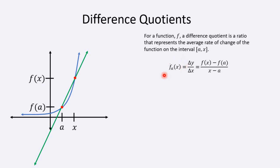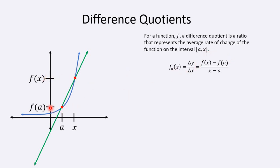The symbol we use is an f with a bar on top of it, a subscript of a — which represents the beginning of the interval — and the independent variable x, which represents the end of the interval. The difference quotient is f of x, the y-value of the second point, minus f of a, the y-value of the first point, divided by x minus a, the difference in the two x-values. So delta y over delta x represents the average rate of change.